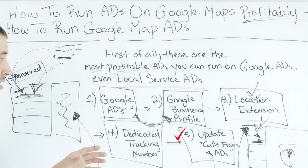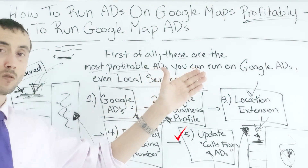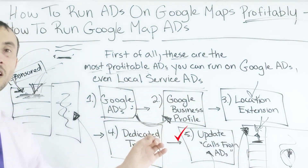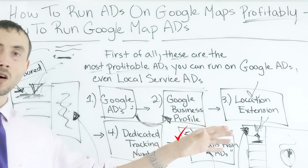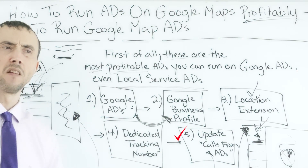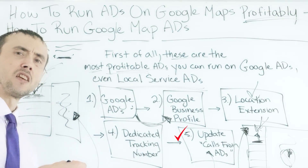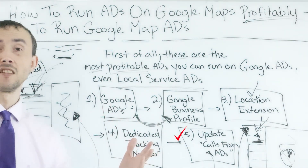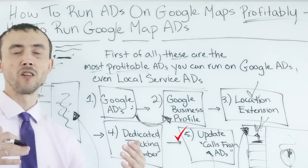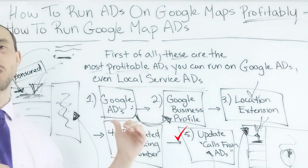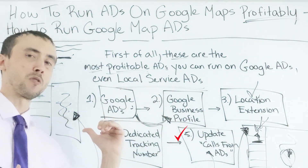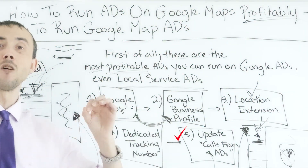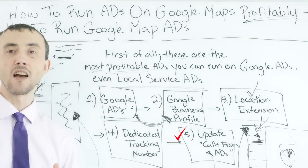They use the data to steer your ads but don't use it to charge you per click. It's a bit weird — you'd think if they can see you got a call they'd charge you for it. But it makes sense: if Call Rail screws up a conversion report, Google doesn't want customer service problems charging people for something they didn't independently verify happened.